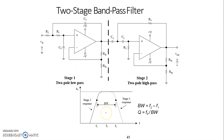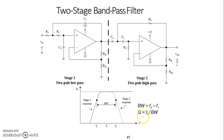For a bandpass and band reject filter, there is a parameter referred to as bandwidth. This is the range of frequencies being allowed to pass through. Bandwidth equals f2 minus f1, where f2 and f1 are the upper and lower cutoff frequencies respectively, at which the gain is 70.7% of the maximum gain, or 3 dB less than the maximum gain. A quality factor is defined as f0, the central frequency, divided by bandwidth.